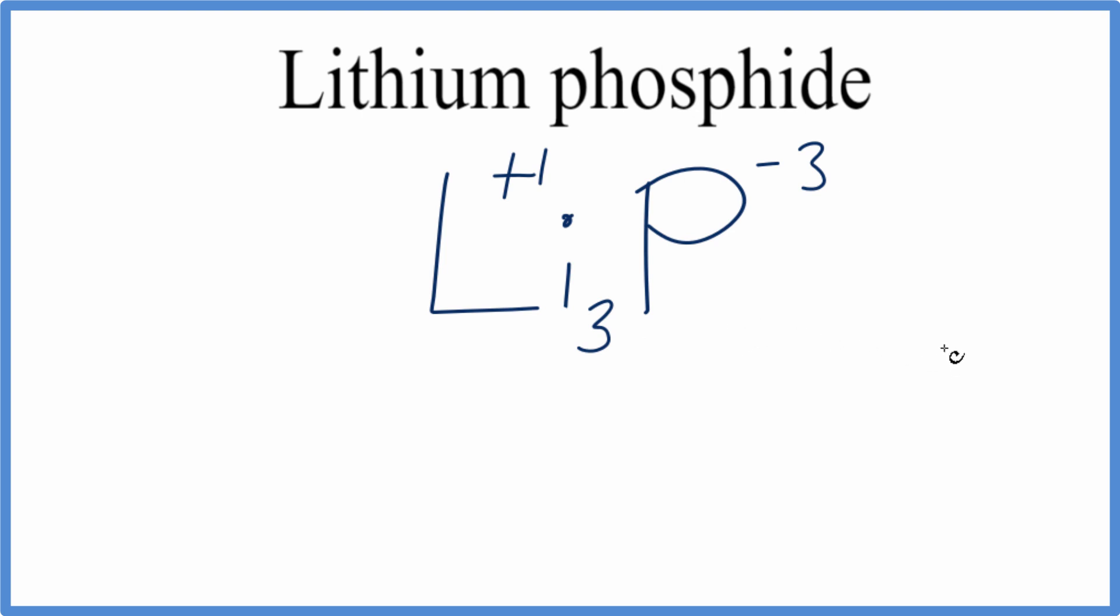We can quickly check our work using what's called the crisscross method. We take the three on the phosphorus, cross it down here, and take the one on the lithium, put it right here. But we don't really need to write one, so let's get rid of that, and let's get rid of the charges. We have the same result, Li3P, as the formula for lithium phosphide.